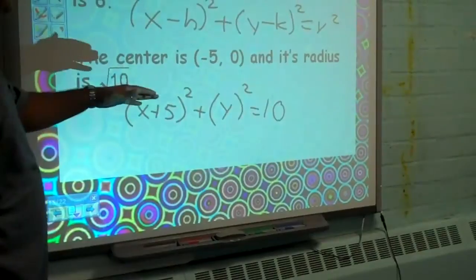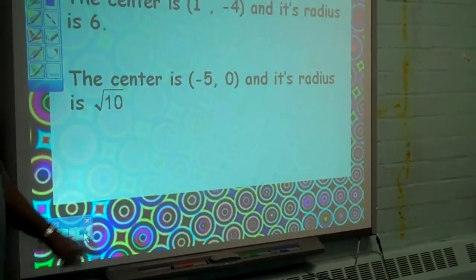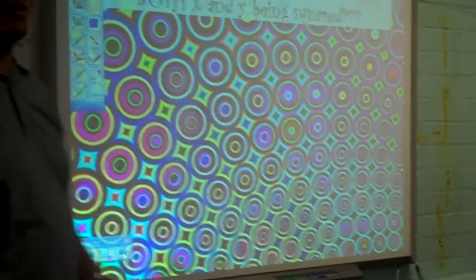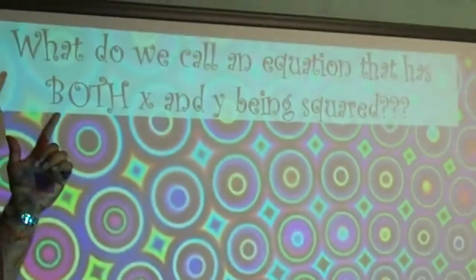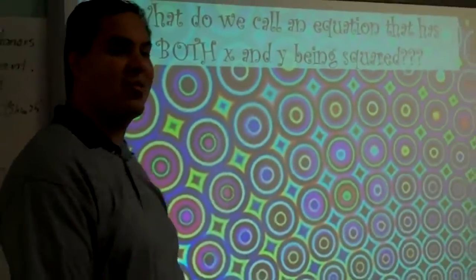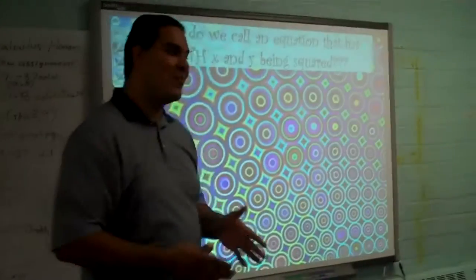Now, these equations where X is being squared and Y is being squared have a name. What do we call an equation that has both X and Y being squared? Any guesses where both X is being squared and Y is being squared?